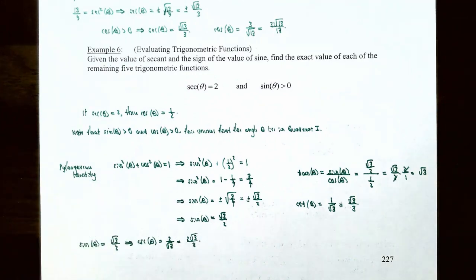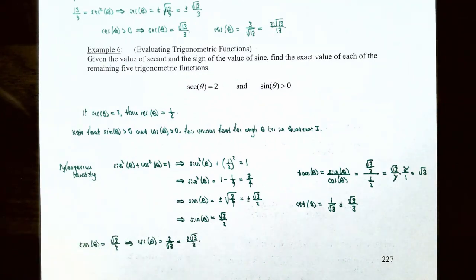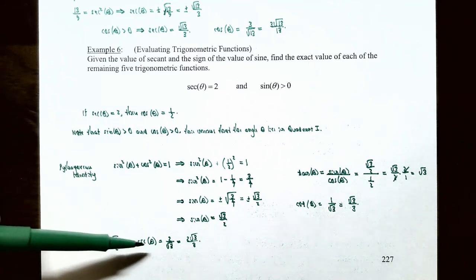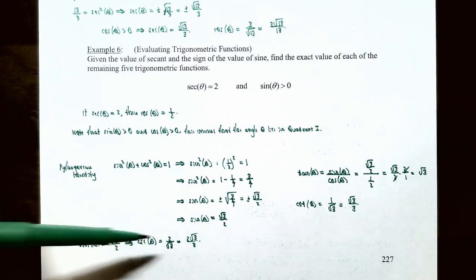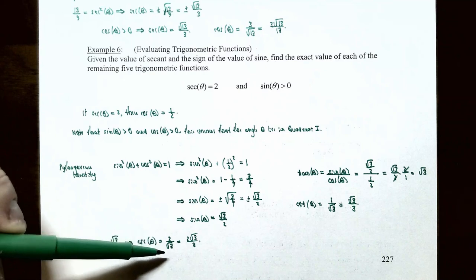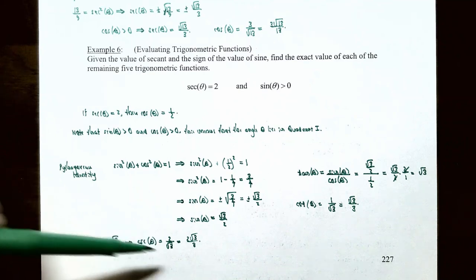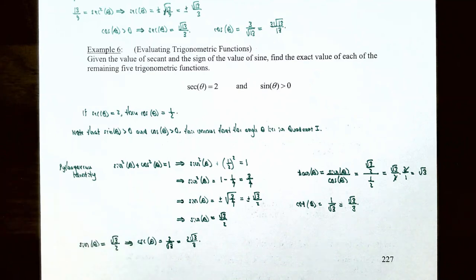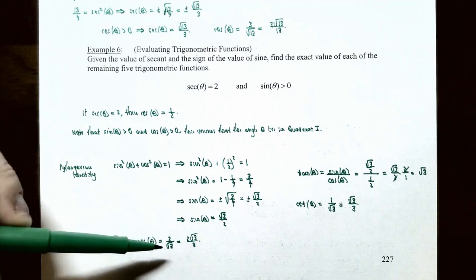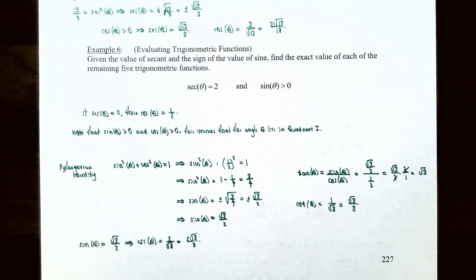Now that we know sine of theta equals square root 3 divided by 2, cosecant of theta is the reciprocal of sine, so cosecant of theta equals 2 divided by square root 3. Rationalizing the denominator by multiplying by square root 3 over square root 3 gives cosecant of theta equals 2 square root 3 divided by 3.